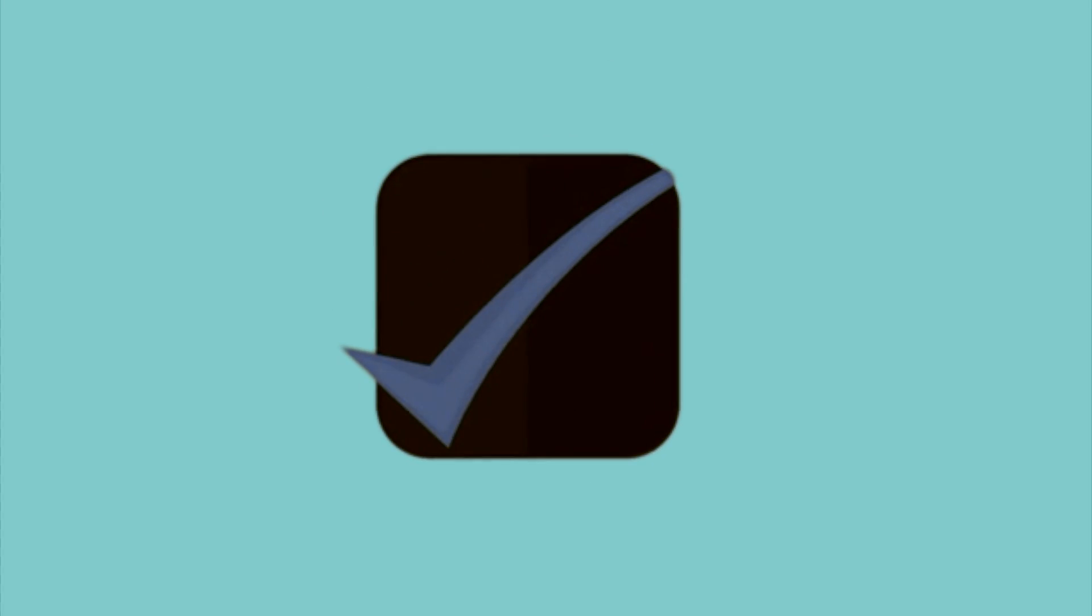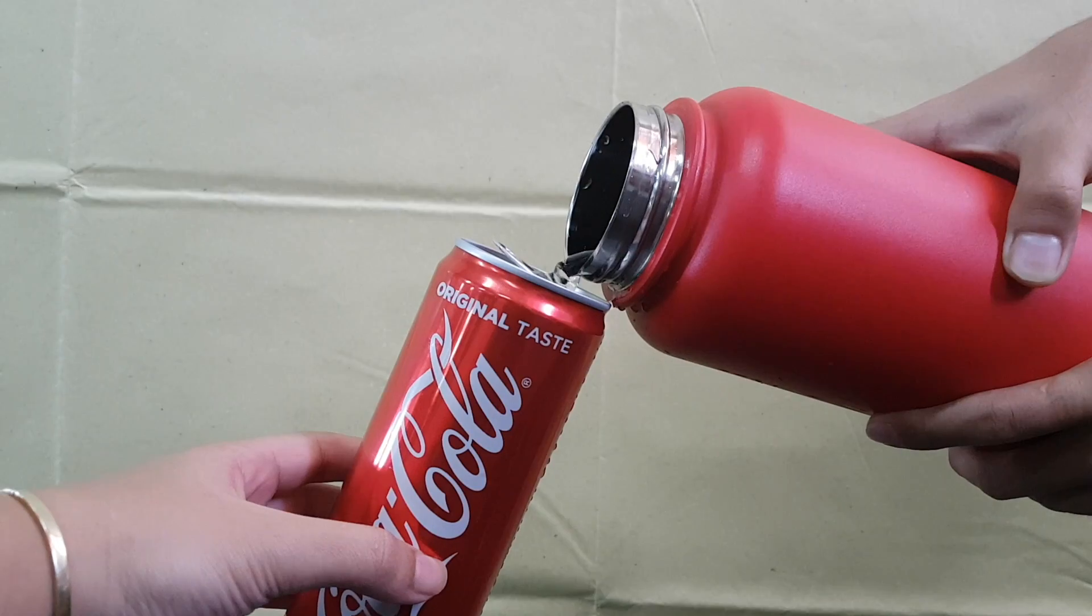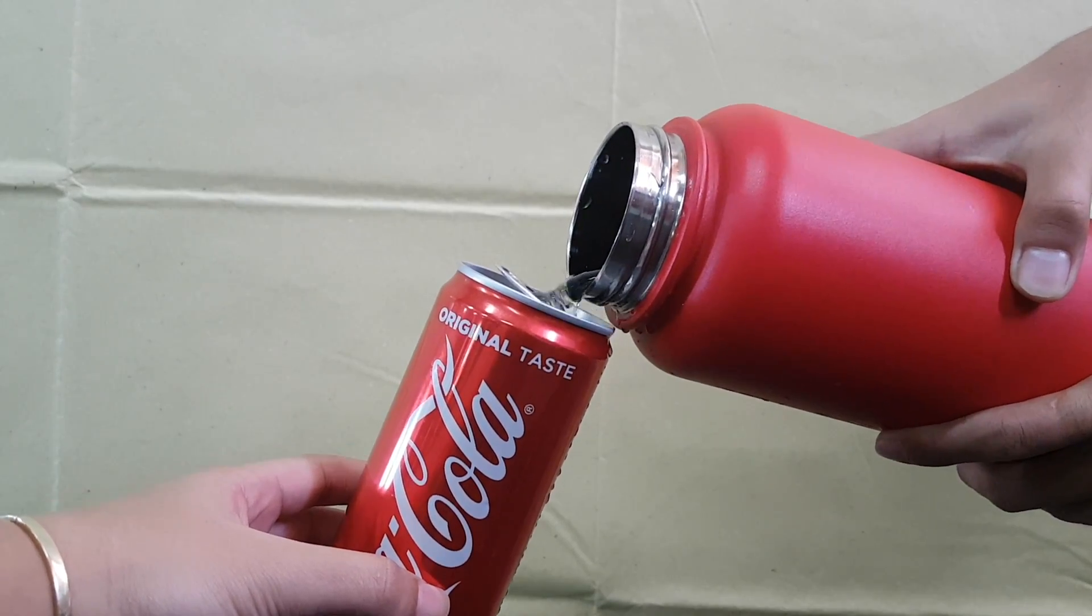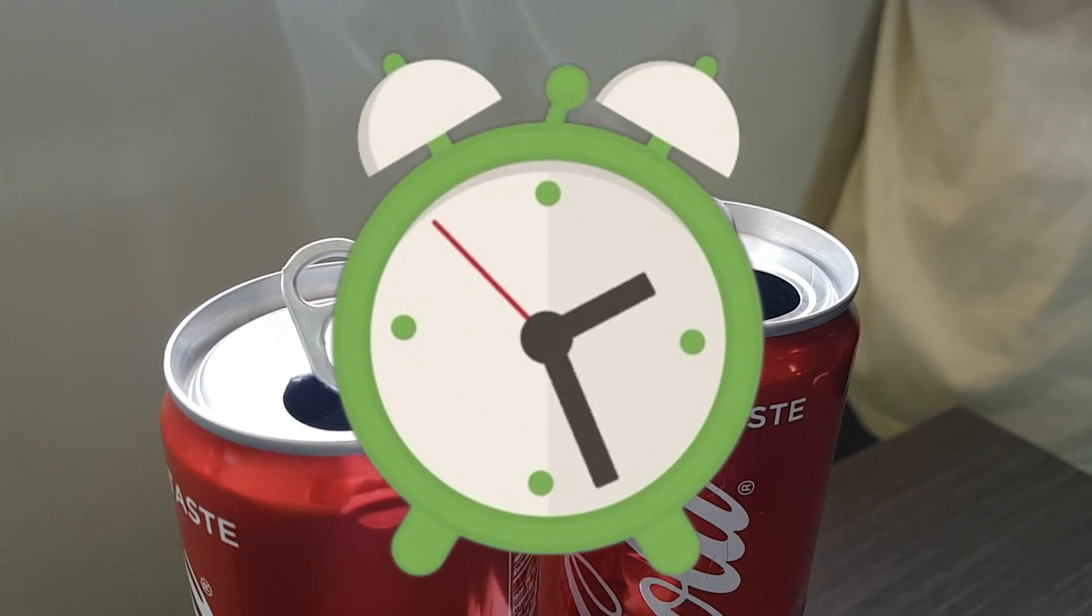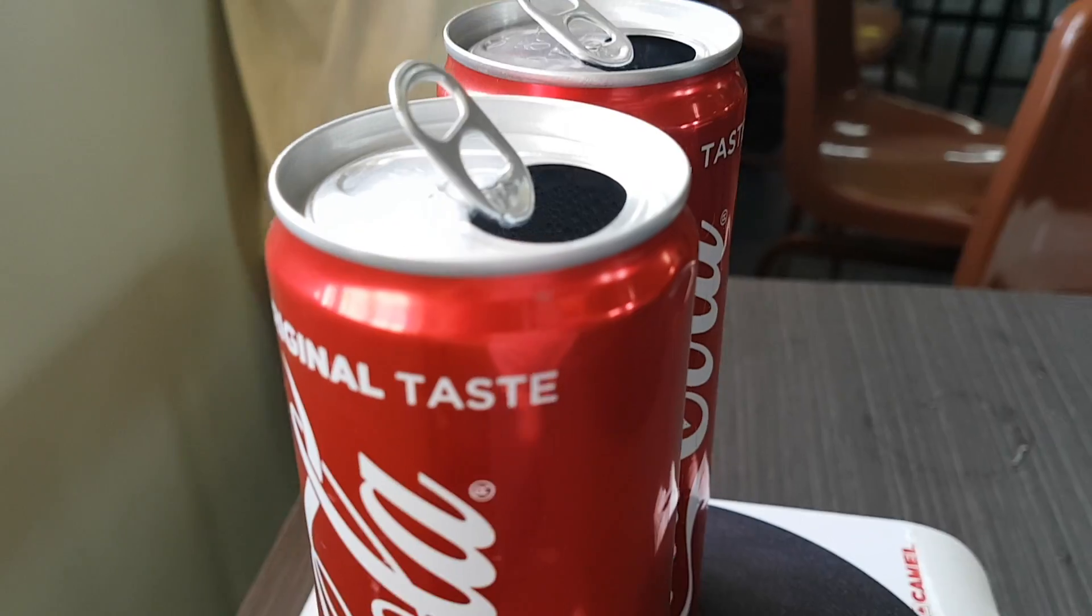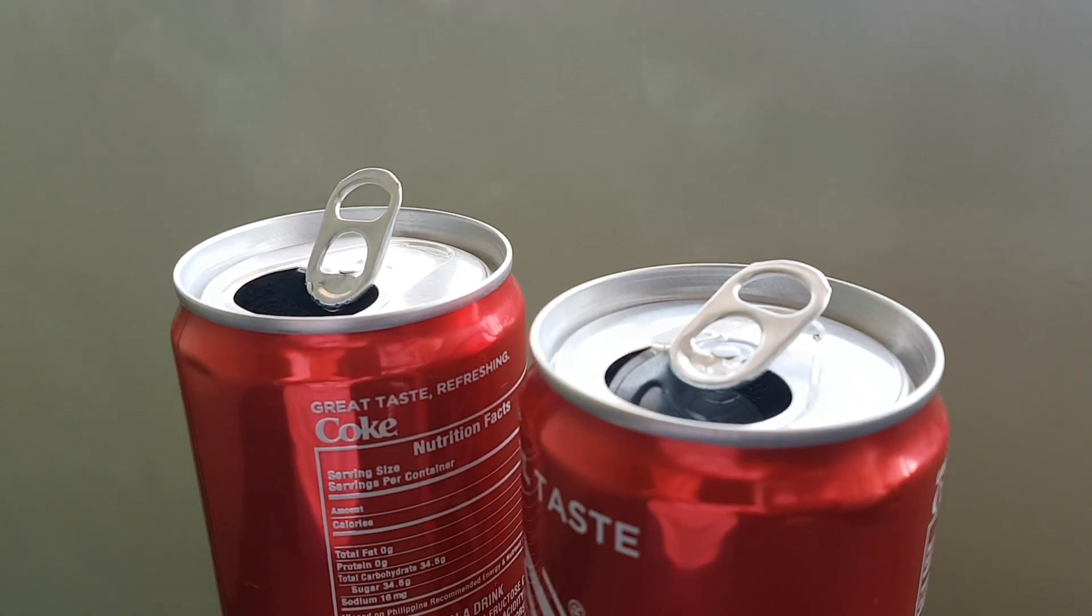Once you've gathered all your materials, the first thing that you're going to do is fill one-fourth of the can with water. Then, place it on top of the hot plate and wait for it to heat up. Once you've seen water vapor coming out of the can, it is now ready.